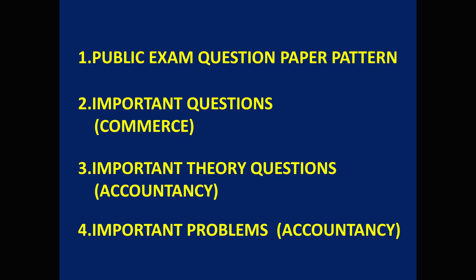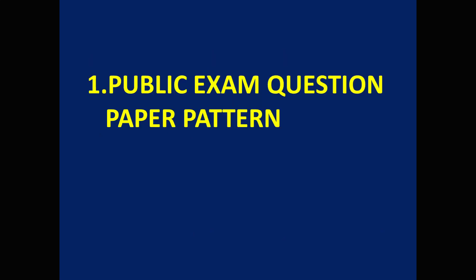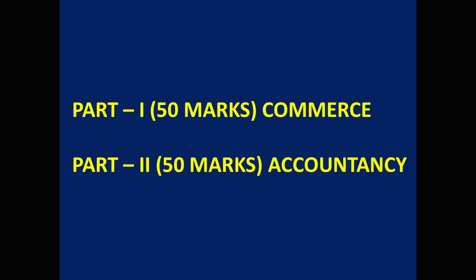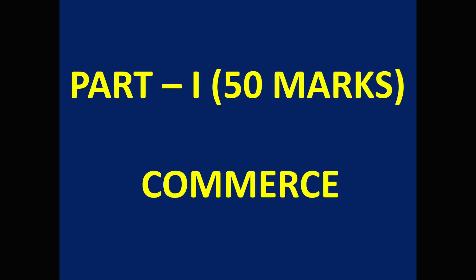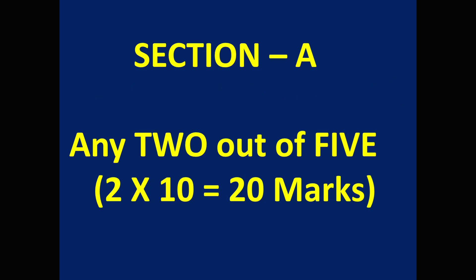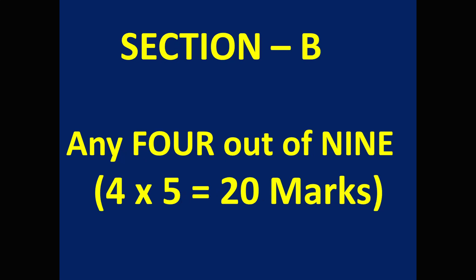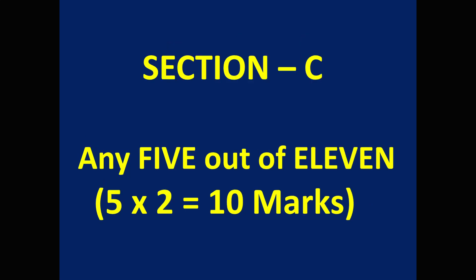Let us see the first topic: public exam question paper pattern. The paper is for 100 marks and divided into two parts. Part one is Commerce for 50 marks; Part two is Accountancy for 50 marks. In Part one, Section A has five questions — attempt any two, each carries 10 marks: 2×10 = 20 marks. Section B contains nine questions — answer any four, each for five marks: 4×5 = 20 marks. Section C contains 11 questions — attempt any five, each for two marks: 5×2 = 10 marks.